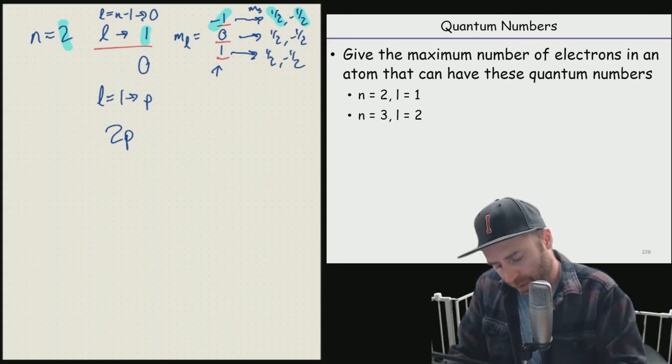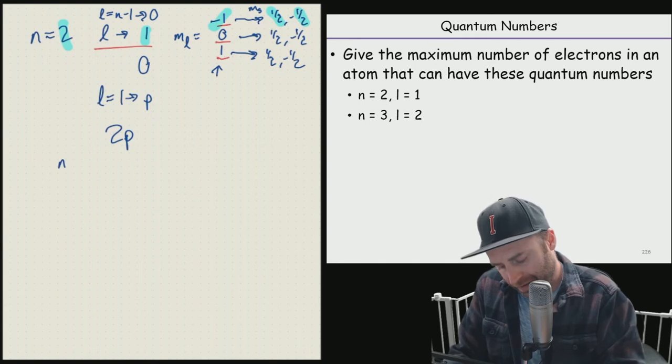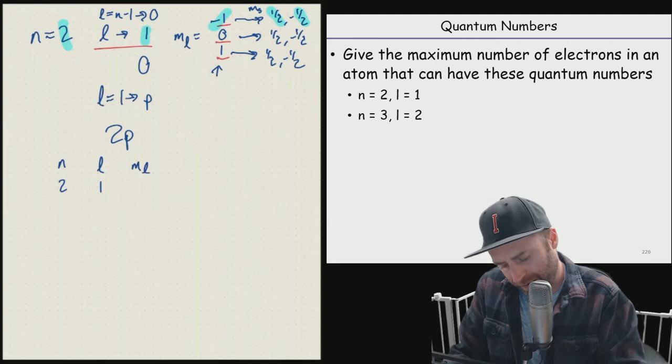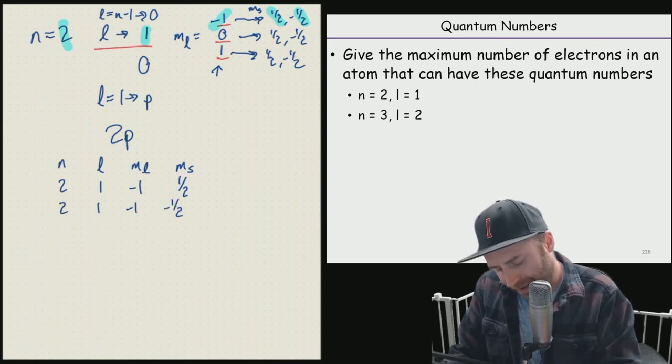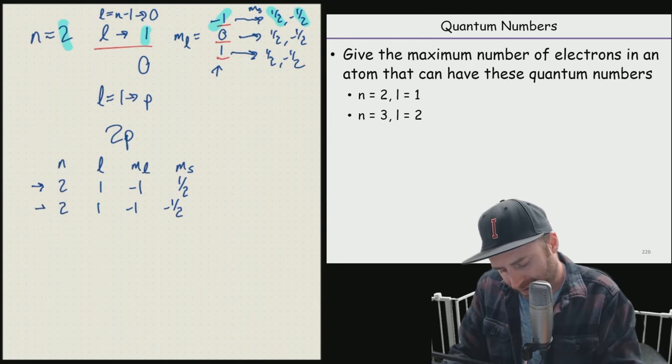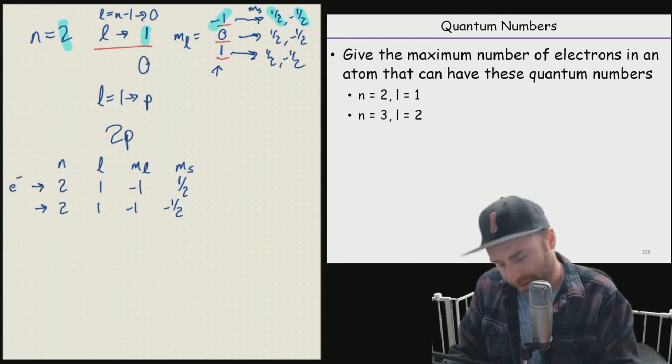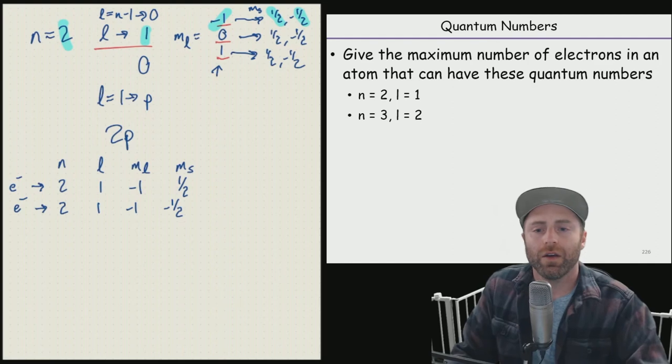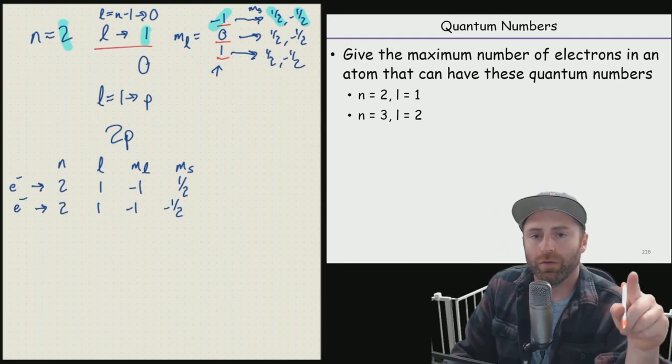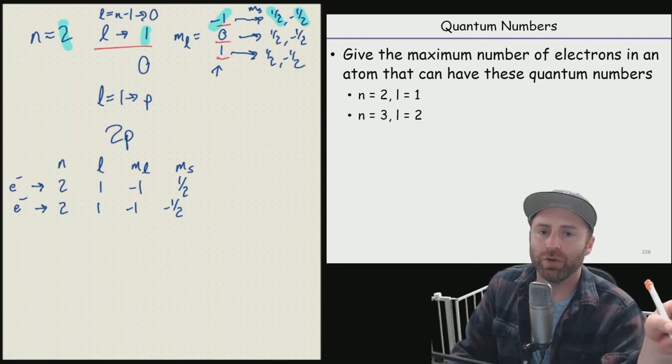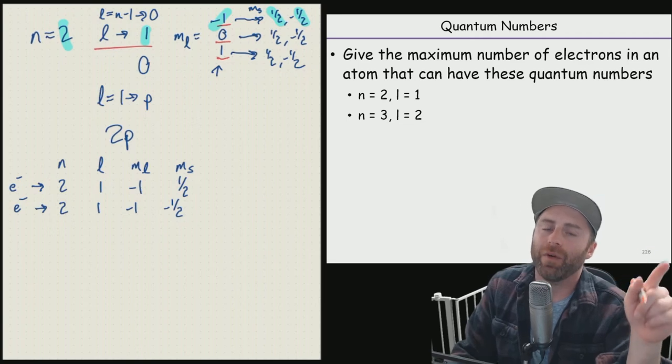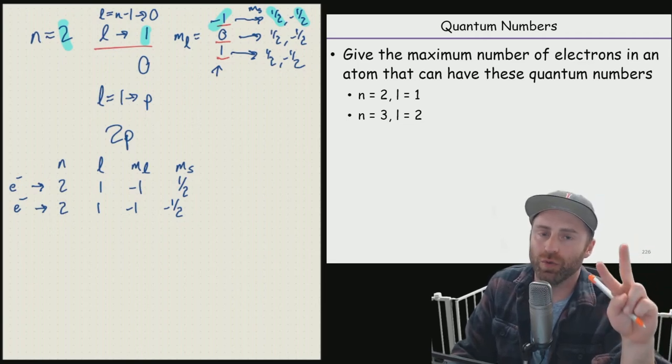So to write that out, we could have N as two, L as one, M sub L as negative one, and M sub S as one half. Or we could have two, one, negative one, negative one half. And this and this are going to correspond to one electron apiece. So right now, with what we've got highlighted in blue, we have a possibility of having two electrons.